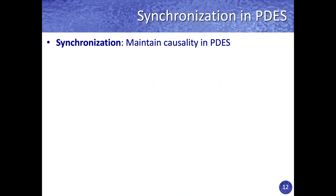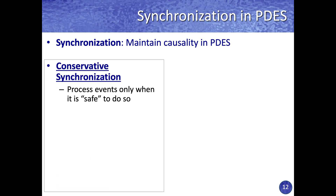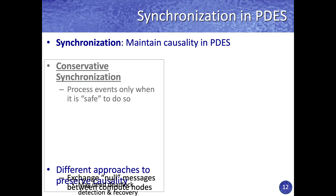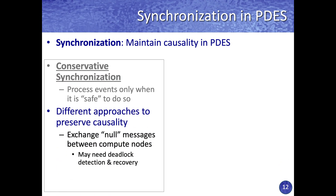This is where synchronization comes into the picture. The objective of all synchronization algorithms is to maintain causality in a parallel simulation. There are two key strategies. The more traditional one is conservative synchronization, where events are processed only when it is guaranteed to be safe to do so. A commonly used approach is to exchange null messages that define an upper bound of time on each logical process.